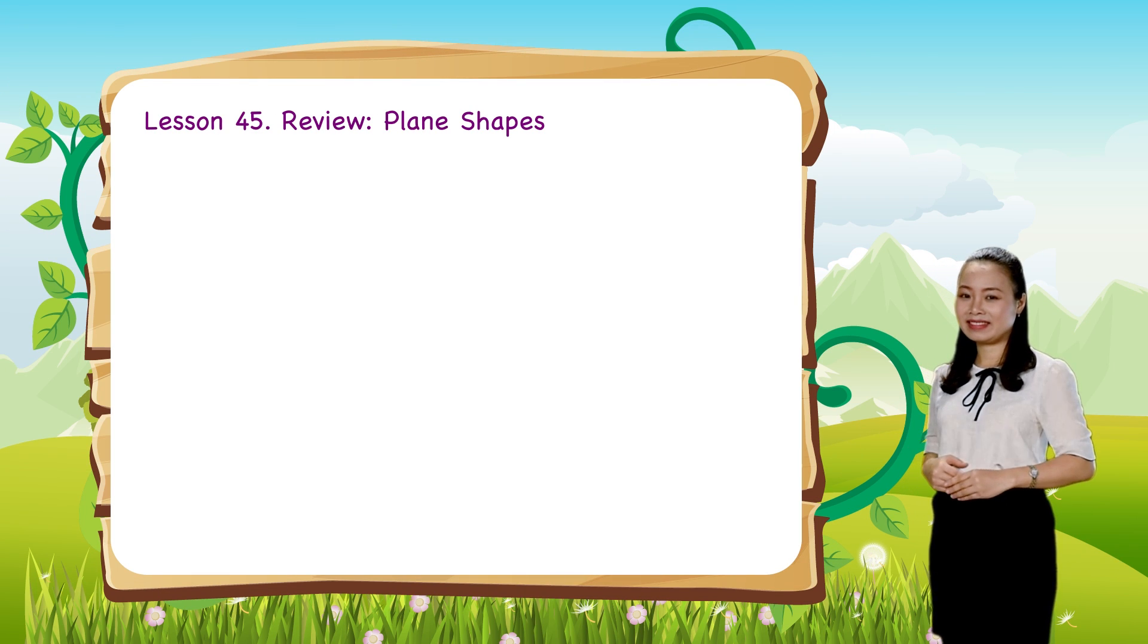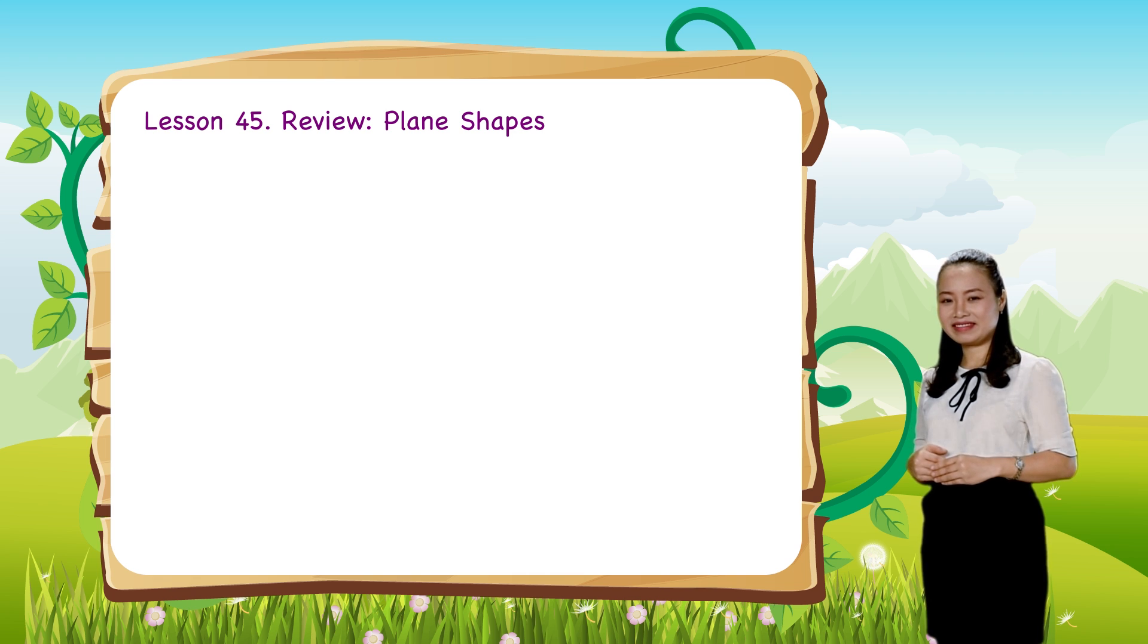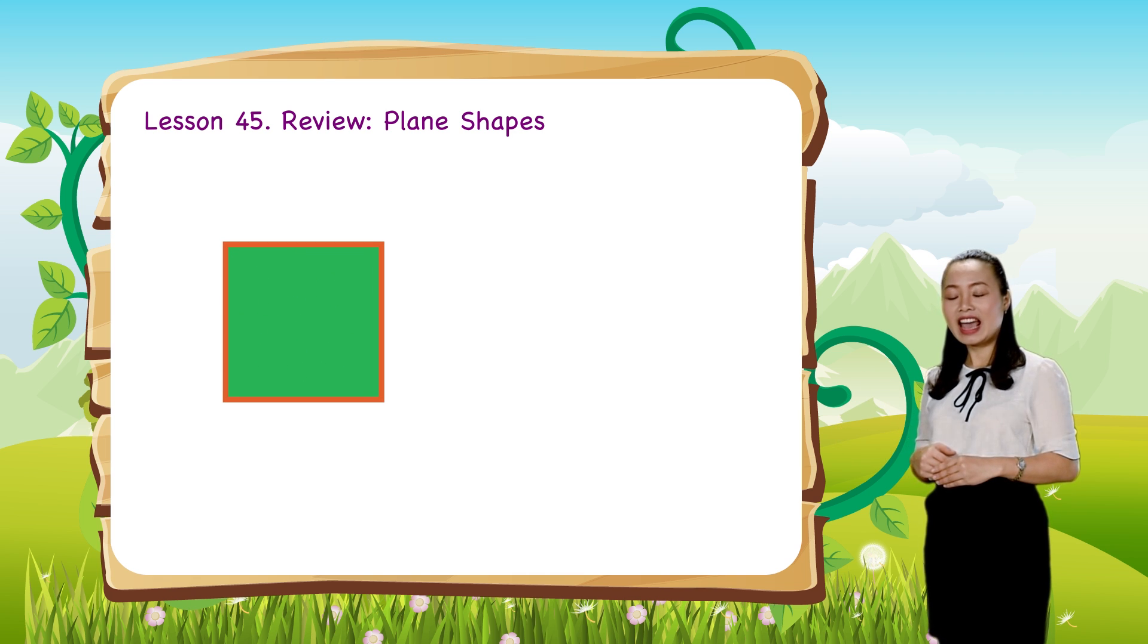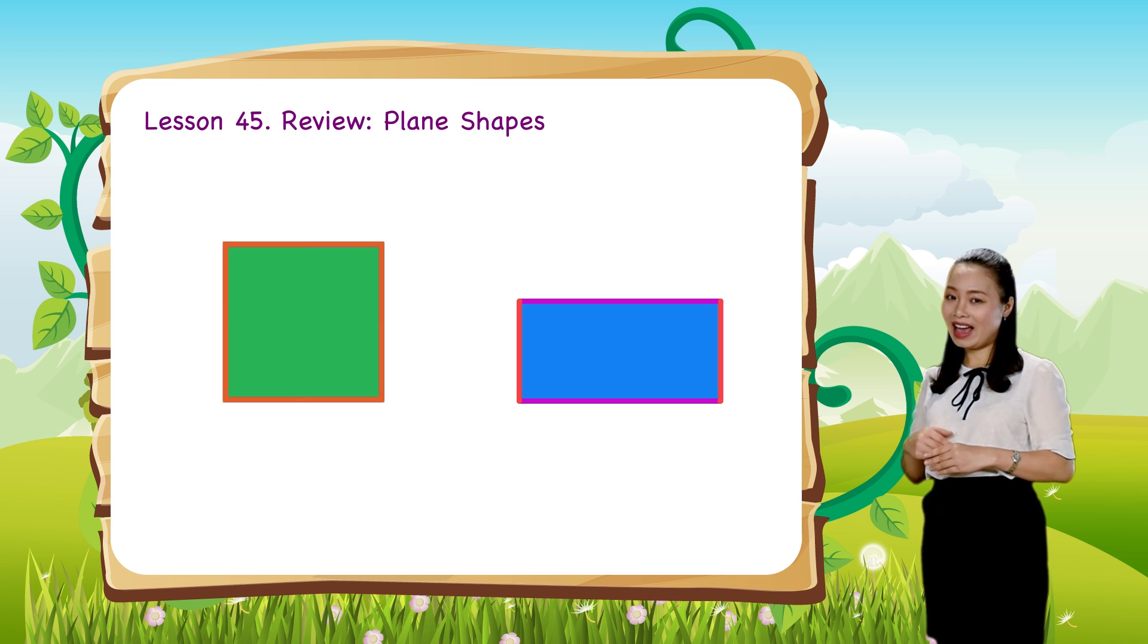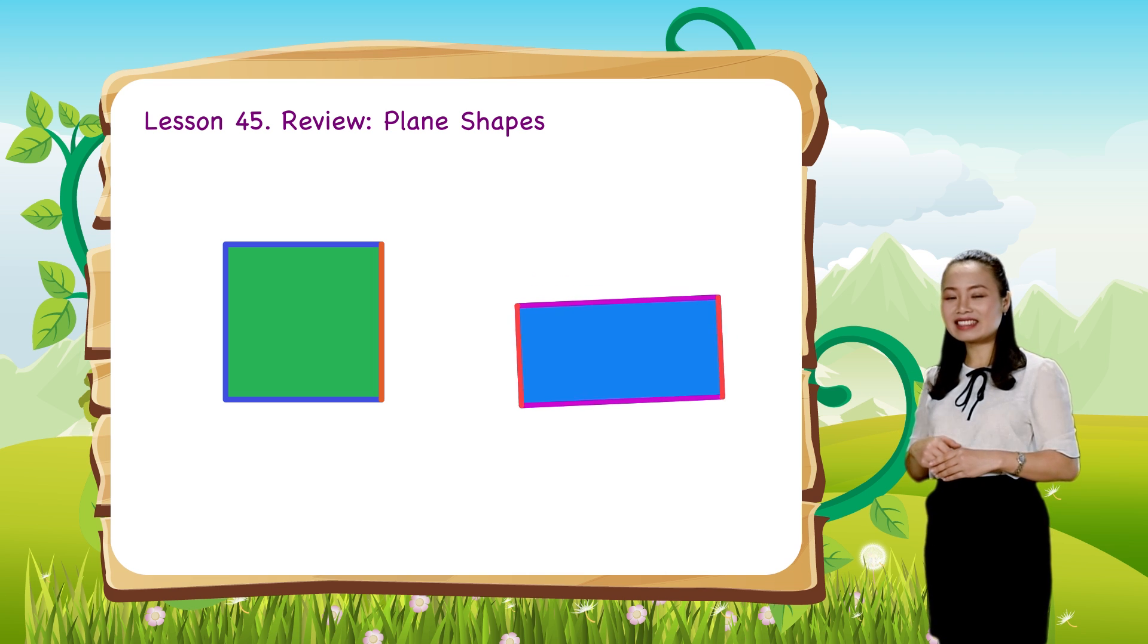Now, let's carry on. How are the square and rectangle different? So, the square has four equal sides, whereas the rectangle doesn't.